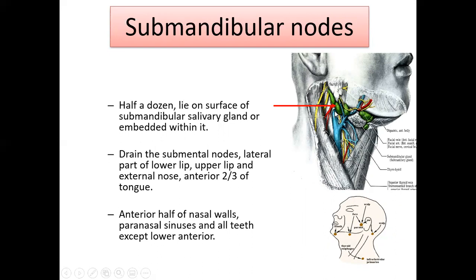For the submandibular lymph node, about half a dozen lie on the surface of the submandibular salivary gland, and sometimes they are embedded within the gland itself. The submandibular lymph node drains the lateral part of the lower lip, the upper lip, the external nose, the anterior two-thirds of the tongue, the anterior half of the nasal wall, the paranasal sinuses, and all teeth except the lower anterior teeth.